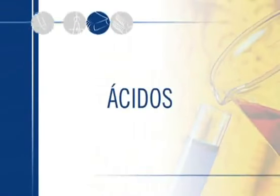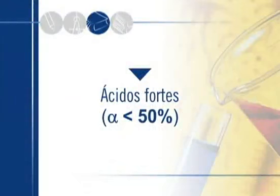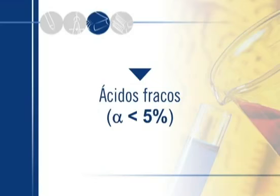Iniciaremos então vendo os ácidos e vamos classificá-los em função do alfa. Começamos com os ácidos fortes: apresentam um alfa maior do que 50%, ou seja, mais da metade das moléculas se ionizam. Também temos os ácidos moderados, também chamados de semifortes, onde o alfa fica entre 5% e 50%. E finalmente temos os ácidos fracos, com alfa inferior a 5%.